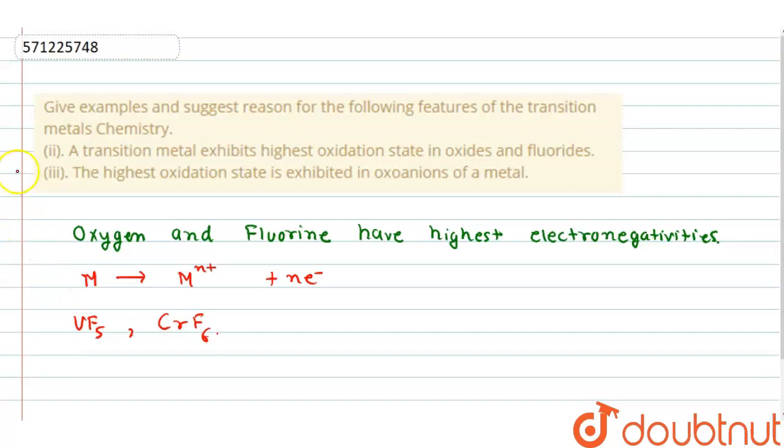Now coming to the next part of this question, that is the highest oxidation state is exhibited in oxoanions of metal.